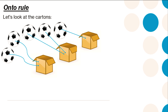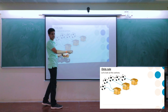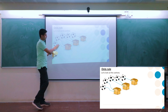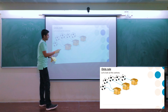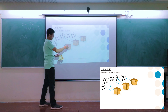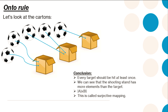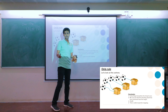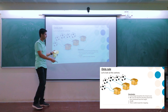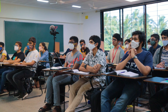Another type of rule is the onto rule. Take the example of cartons: there are five balls and three cartons — two in one, two in another, and one in the third. This is a rule where multiple things in set A can map to the same thing in set B. The conclusion: every target should be hit at least once — nothing is hit zero times. The shooting stand has more elements. In mathematical language, the cardinality of A is greater than or equal to B. This is called the surjective map.